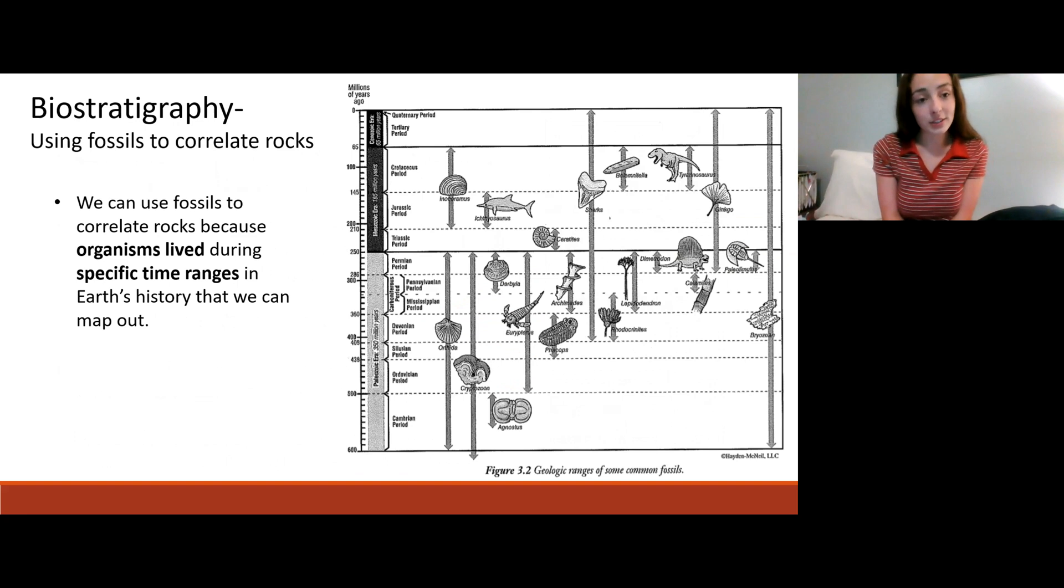First we'll go over biostratigraphy. Biostratigraphy is using fossils to correlate strat columns. We can use fossils to do this because organisms typically lived in specific time ranges which have pretty much all been mapped out for us because paleontologists have done a lot of work. That's not to say there isn't more to discover. There is always more to discover.